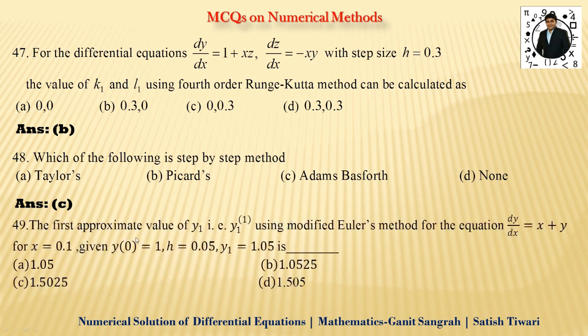Now next 49, the first approximate value of Y1, that is Y1 of 1 using modified Euler's method for the equation dy/dx equals to x plus y for x equals to 0.1, given Y of 0 equals to 1, h is 0.05, y1 equals to 1.05. Toh y1 aapko by Euler's method diya huwa hai aur aapko Euler's modified method se aapko answer nikalna hai. Toh aapko yeh y1 ka formula use karna padega ka it is what, y0 plus h, it is f of x0 comma y0 yeh hoga. Aur dusra term rehega ka it is what, f of x1 or y1. Aisa similar question maine solve kiya huwa hai.